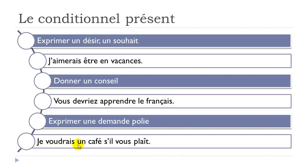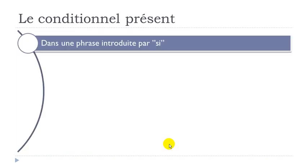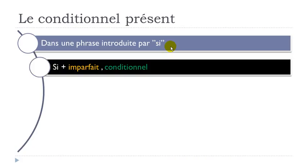The third use is to ask something politely — especially in a café, restaurant, or shop. Trust me, it's quite important. For example: je voudrais un café, s'il vous plaît (I would like a coffee, please). So to review: j'aimerais être en vacances; vous devriez apprendre le français; je voudrais un café, s'il vous plaît.